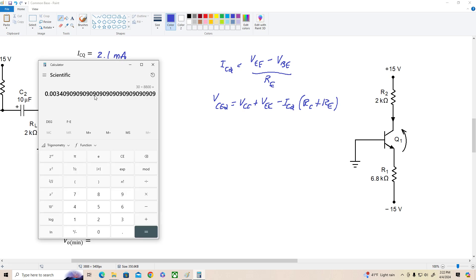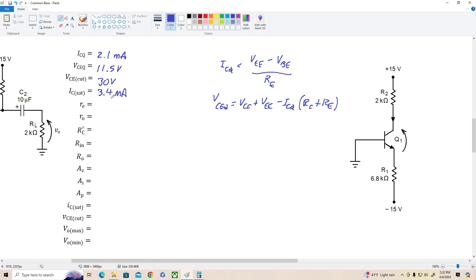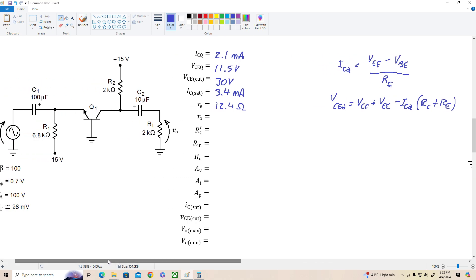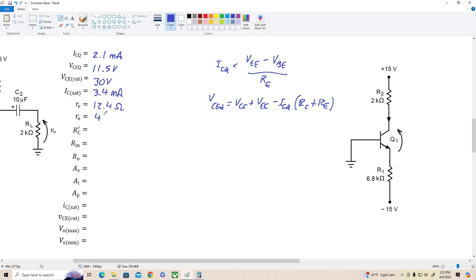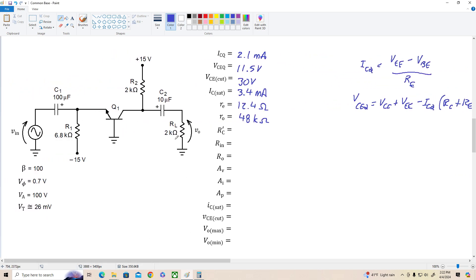Little RE is 26 millivolts divided by ICQ, which is 2.1 milliamps. So that gives us a little RE of about 12.4 ohms. The output resistance, remember, is the early voltage. V sub A is 100 divided by ICQ. So let's see what we've got here. 100 divided by 0.0021 is about, let's call it 48k ohms. That's close enough. So RO is about 48k ohms.